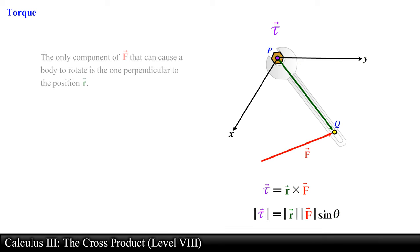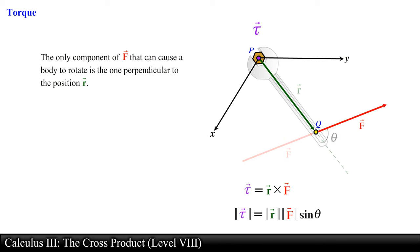Also notice that the only component of the force vector F that can cause a body to rotate is the one perpendicular to the position vector r, or in this case, the magnitude of the force vector F times sine of theta.